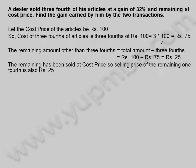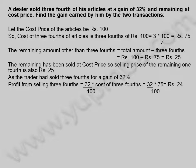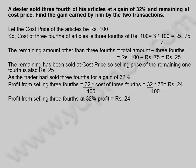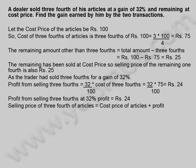The remaining has been sold at cost price, so the selling price of the remaining 1/4 is also 25 rupees. As the trader had sold 3/4 for a gain of 32%, profit from selling 3/4 is equal to 32/100 into 75, equal to 24 rupees. Profit from selling 3/4 at 32% profit is equal to 24 rupees.